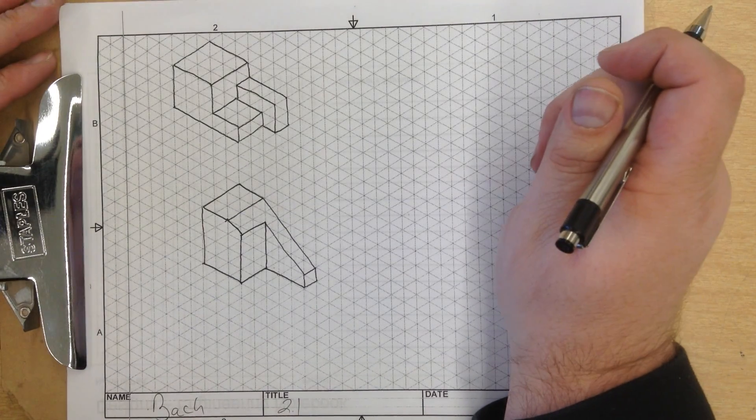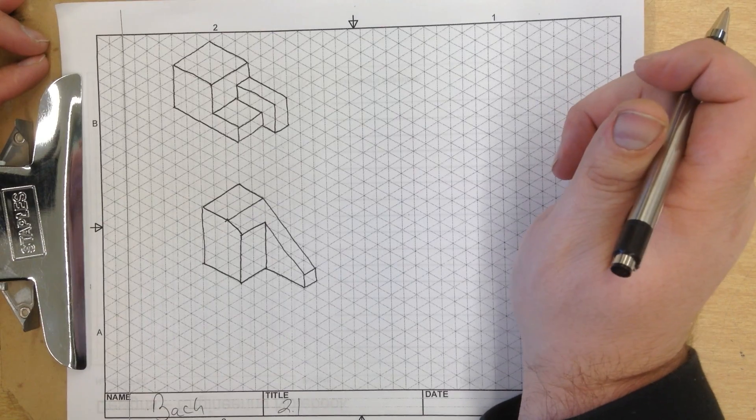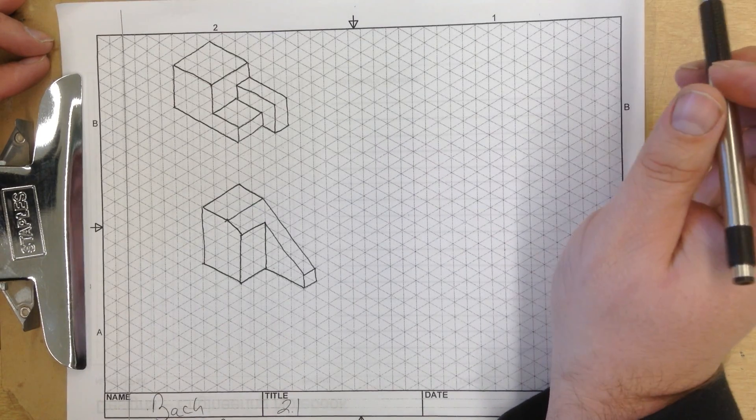Hey everybody, today we're going to go through a little bit of isometric drawing. If you remember, isometric means 3D, and you're going to start with these two examples right here.